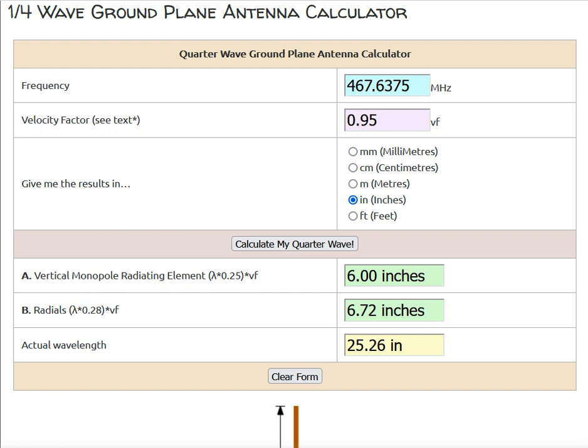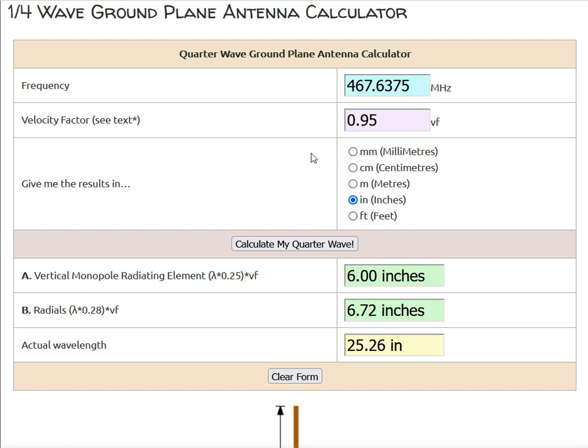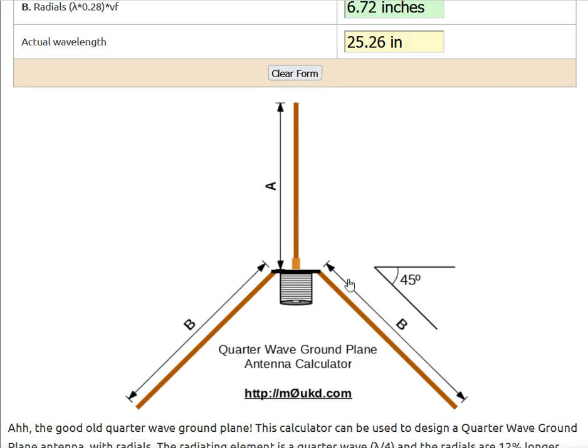I did order the chassis mount SO239 plugs so I can build an antenna like this. It's a chassis mount so it will be like a square and it will have four bolt holes in each corner which will be great because I got to add these ground planes on there.